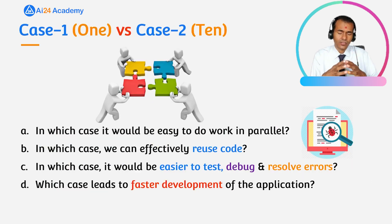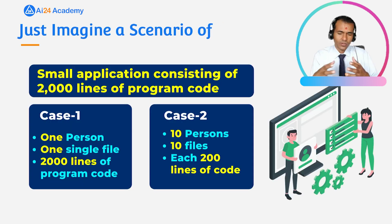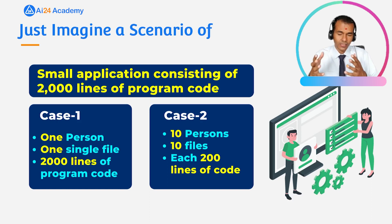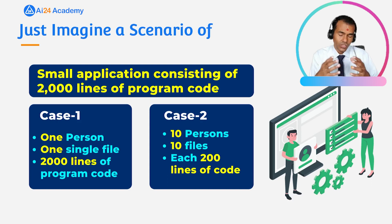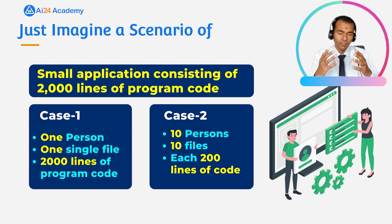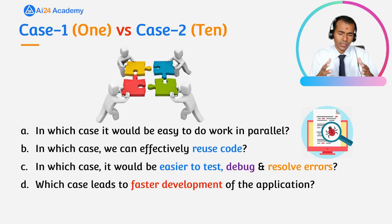For the third point — ease of testing, debugging and error resolution — in case one we have 2000 lines of code, which makes it difficult to go through. In case two we have 10 files of approximately 200 lines each, so if there is an error in any file it would definitely be easier to debug, test, and find errors. Case two is better here as well.